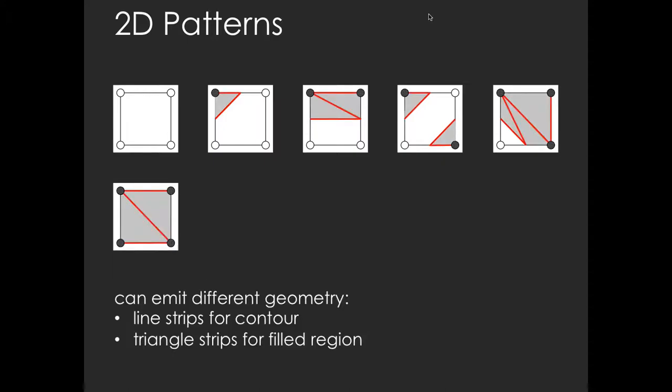Finally, as a simple variation, one might decide to fill the contour trace by the ISO line. In this case, instead of listing vertices of line strips for each pattern, we list the vertices of triangle strips.